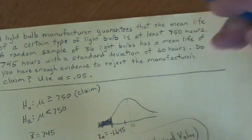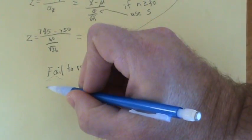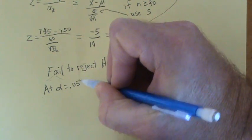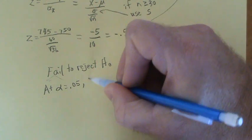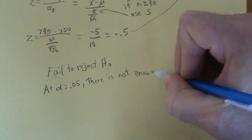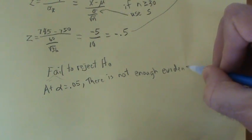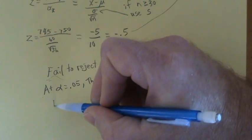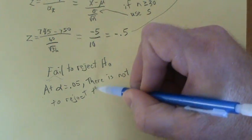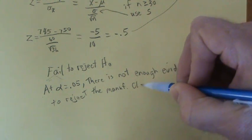So to interpret this, we would say something like: at the 5% level of significance, at α equals 0.05, there is not enough evidence to reject the manufacturer's claim.